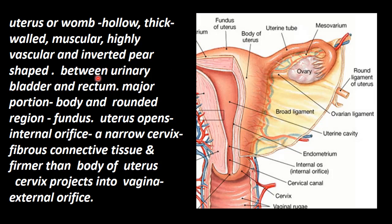The uterus lies between the urinary bladder and the rectum in the pelvic cavity. The major portion of the uterus is called the body of the uterus. The rounded portion above the body of the uterus is called the fundus of the uterus.